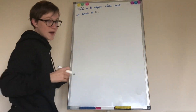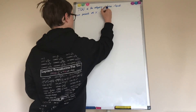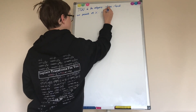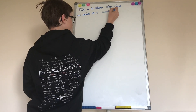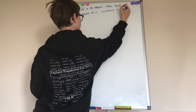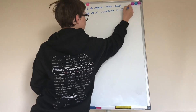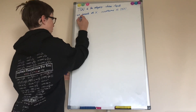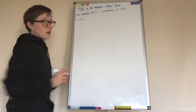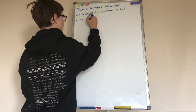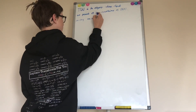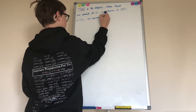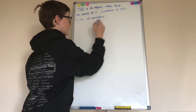The objects are points of X, and the morphisms of this fundamental groupoid of X from X to Y are equivalence classes — I don't know how to spell equivalence — classes of paths.